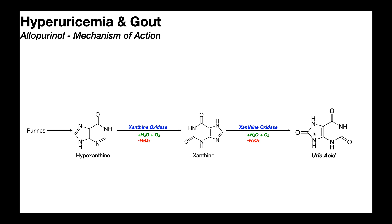Uric acid is a metabolic dead end — it doesn't get metabolized any further in humans because humans lack the enzyme urate oxidase, which would normally degrade it further into a molecule called 5-hydroxyisourate, which can then be degraded even further in other organisms. In humans, we lack urate oxidase, so uric acid cannot be converted to 5-hydroxyisourate and eliminated as in other organisms.